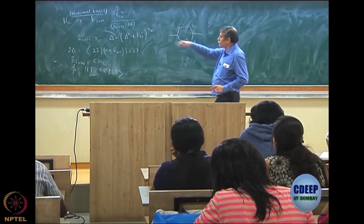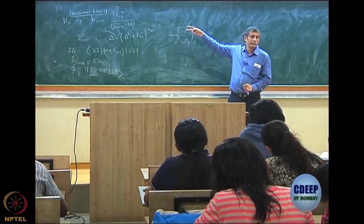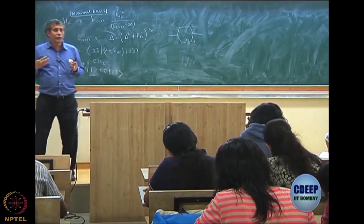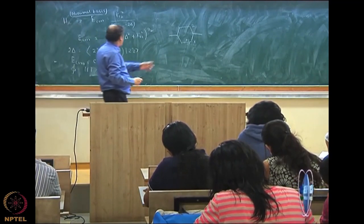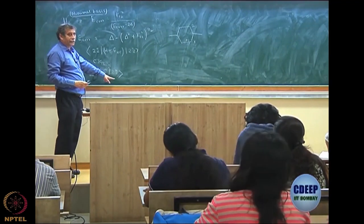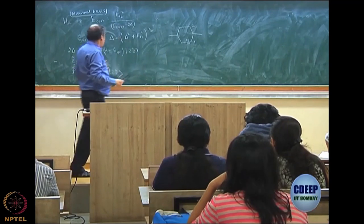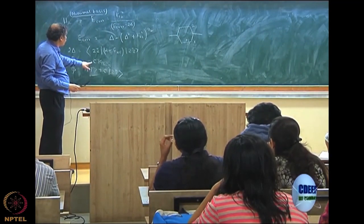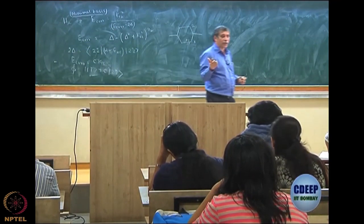Your Hartree-Fock is |1 1̄⟩ and your DCI determinant will be |2 2̄⟩. So our wave function then is |1 1̄⟩ plus a constant times |2 2̄⟩. This is my Hartree-Fock, and |2 2̄⟩ is the other configuration. Now we calculate C and put it back; E correlation is C times k₁₂. That is what we showed last time.